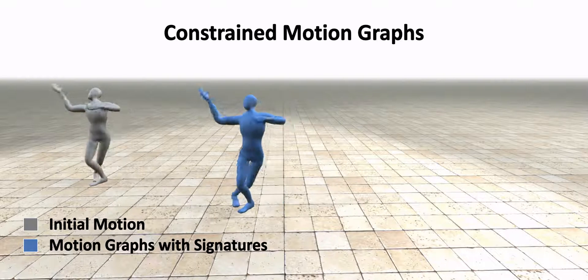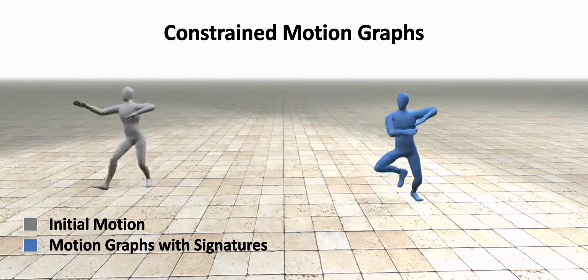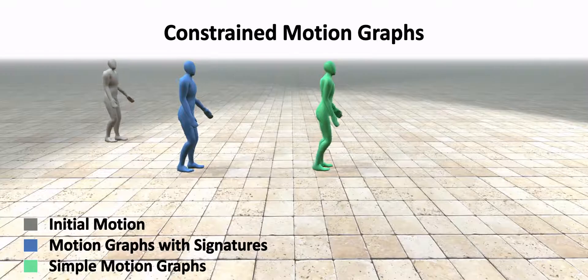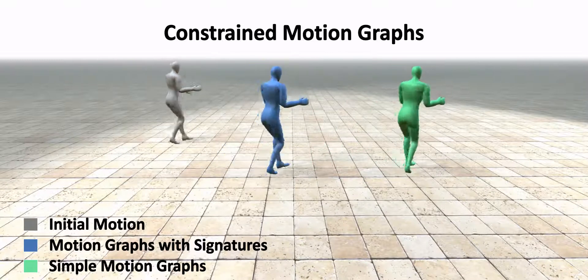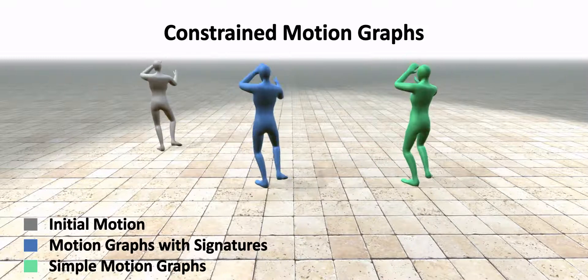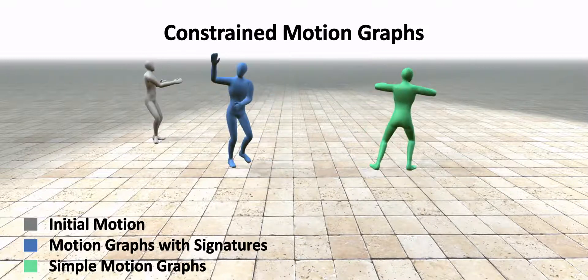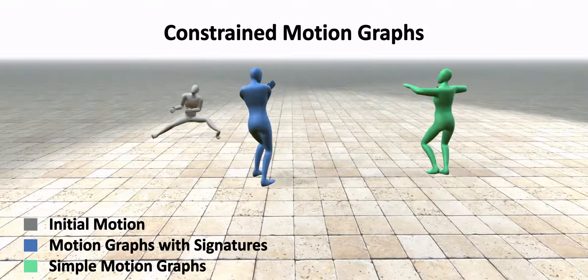Another application of signatures is contextually consistent motion synthesis. In this example, we extend a motion by traversing a motion graph built from human dance motions. Simple traversal of the graph allows transitioning to contextually dissimilar motion, such as moving from salsa dance to Indian Bollywood style dance.